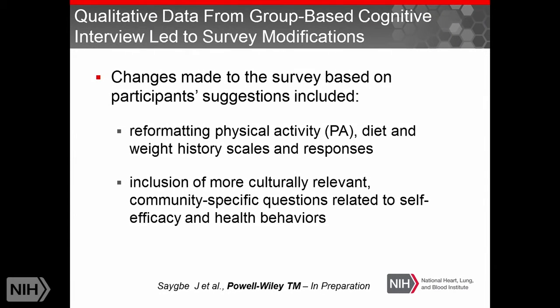Based on our initial focus group on the survey instrument, we made several changes. We reformatted questions so that the scales made more sense for the community. We included questions that members thought were more specific to what individuals might see as barriers to physical activity and diet, particularly around self-efficacy. There were also specific questions on health behaviors they felt needed to be added. We used a group-based cognitive interview approach to really delve into each question in a group setting and maximize the information gained.